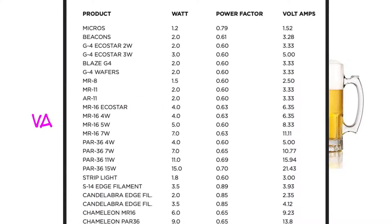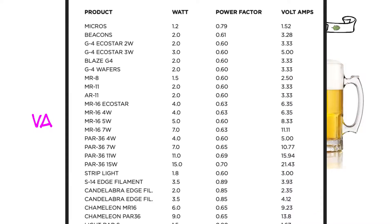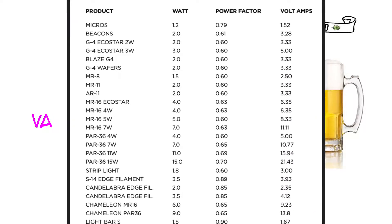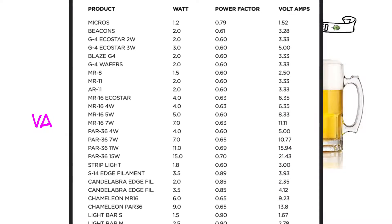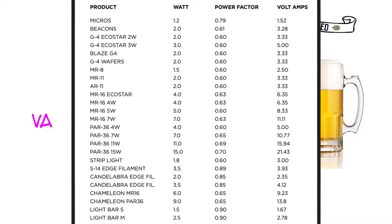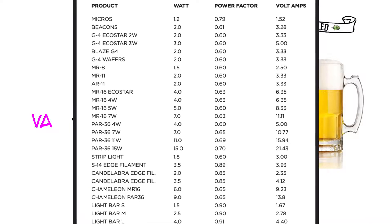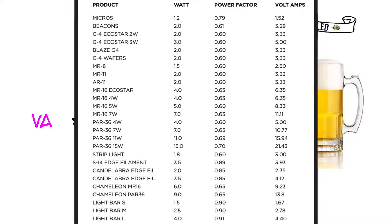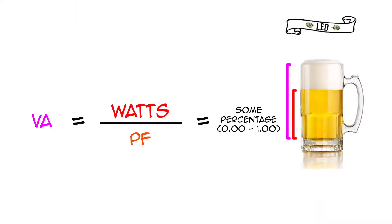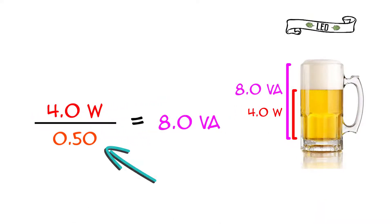Generally, the power factor of LED lamps will be somewhere between 0.5, considered inefficient, and 0.9, considered very efficient. If a lighting manufacturer only provides a watts figure, we recommend assuming a low power factor of 0.5 to be safe.